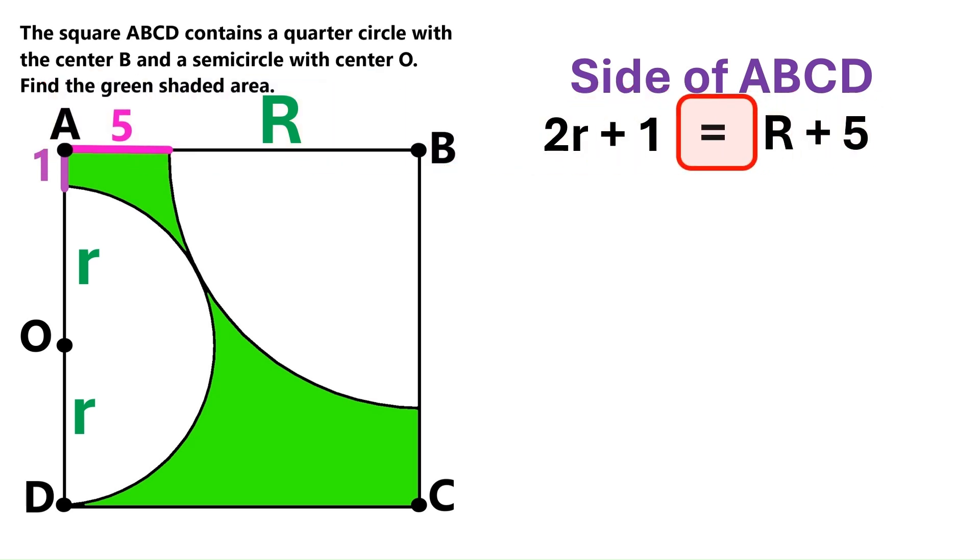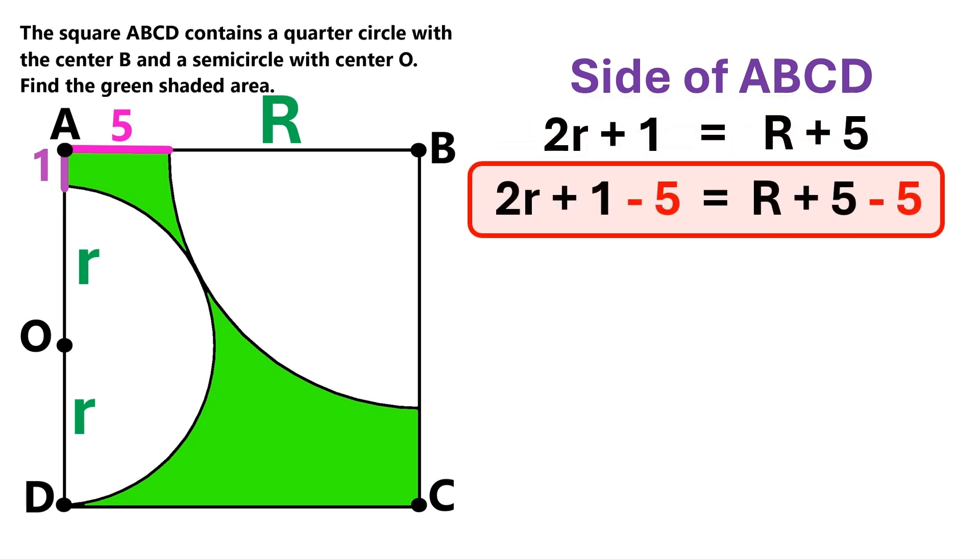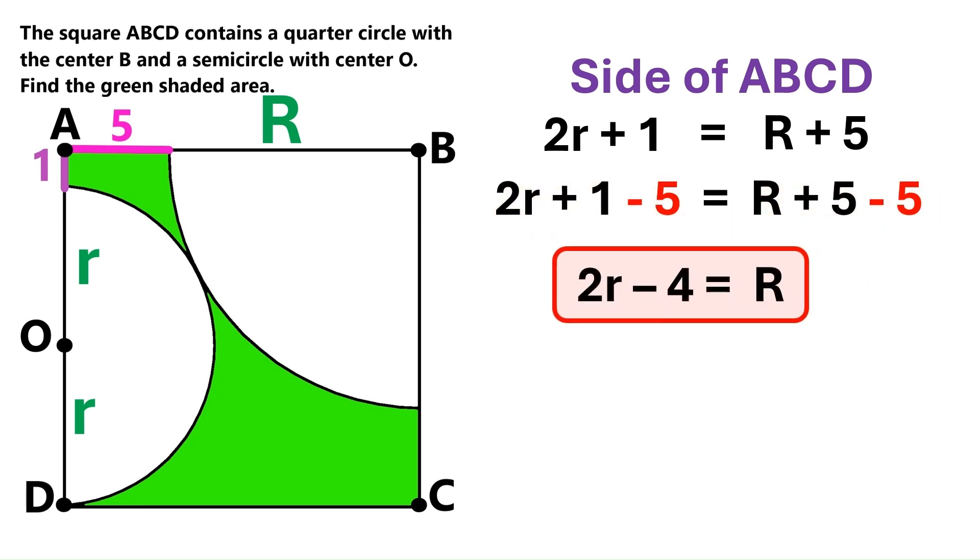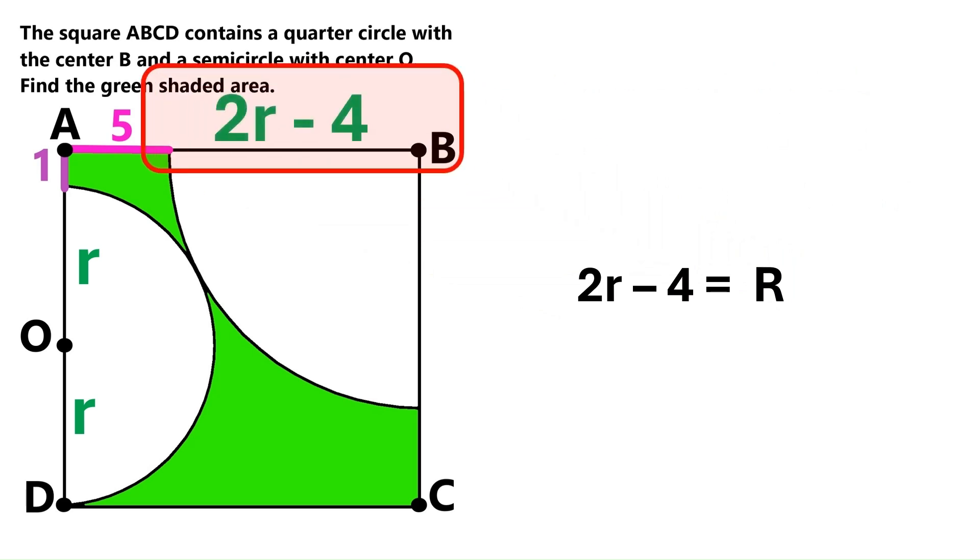We can put an equal sign between the two expressions, because they both equal the side of the square. Next, let's subtract 5 from both sides of the equation. We get this. Capital R equals 2r minus 4. Awesome. Let's quickly replace the capital R here with that.